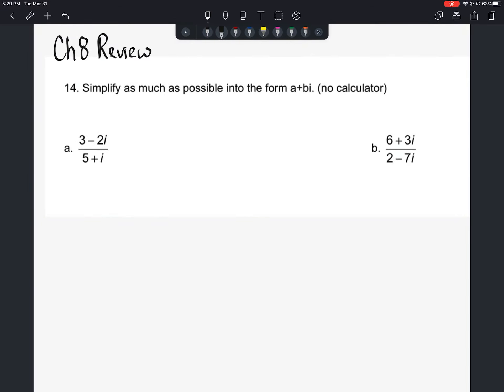All right, this is problem number 14 from the chapter 8 review. I expect there's probably a few people with questions on this one, so we're going to go through it. It says simplify as much as possible into the form a plus bi. So we've got letter a here.